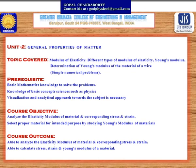The course objectives are: to analyze the elasticity modulus of a material and corresponding stress and strain, and to select proper material for intended purposes by studying the Young's modulus of the material. After completion of this topic, students will be able to analyze the elasticity modulus of a material, calculate stress, strain, and Young's modulus for a given material. These are the expected course outcomes.